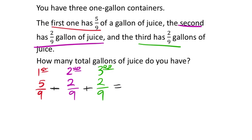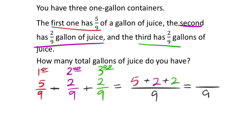Since all denominators already match as ninths, we can add all three numerators: five plus two plus two. Five plus two is seven, then add the last two to get nine. We end up with nine-ninths gallons, and anything divided by itself is one. Since it's a word problem, our final answer is one gallon.